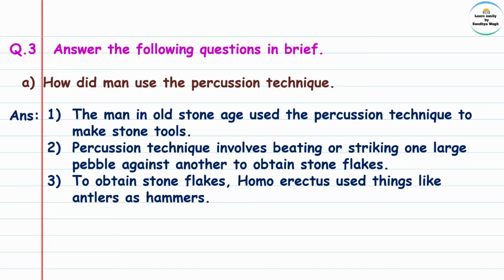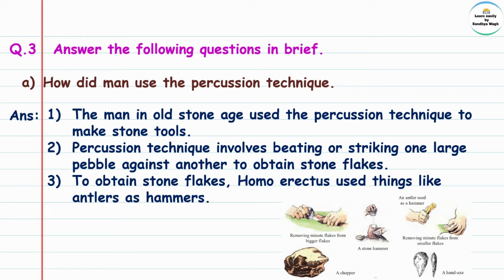The percussion technique involves beating or striking one large pebble against another to obtain stone flakes. Pebble means 'gota'. To obtain stone flakes, Homo erectus used things like antlers as hammers. Antlers means 'shinge'. The antler was thus used as a hammer.